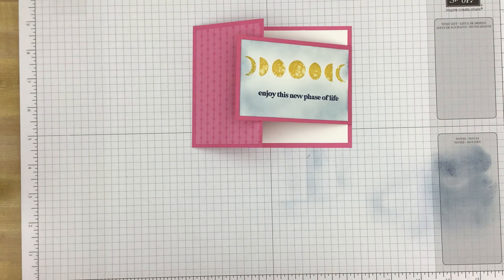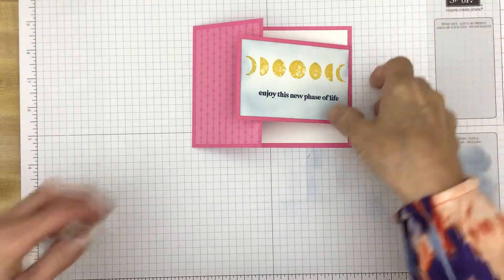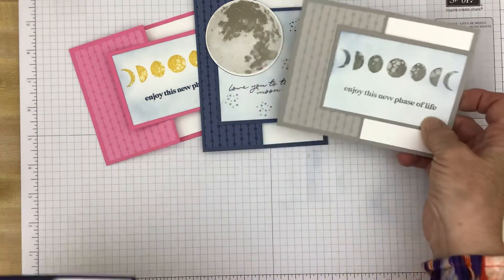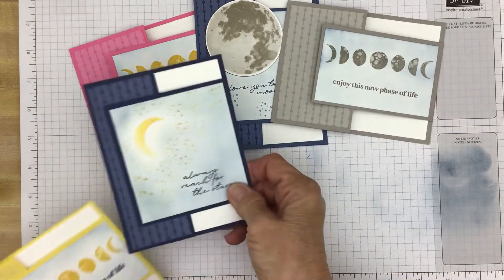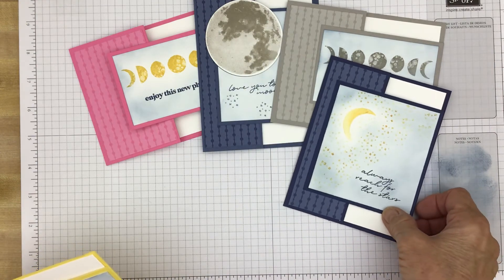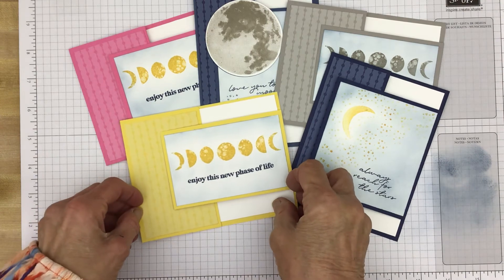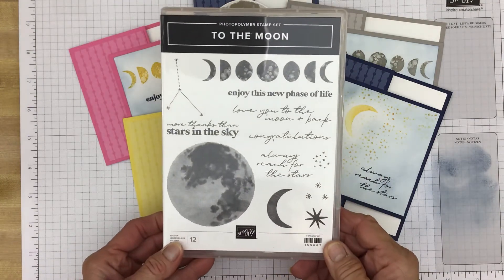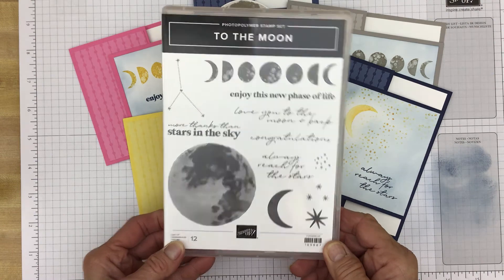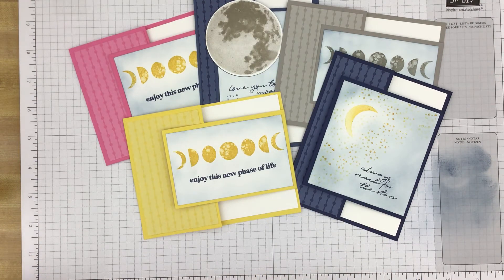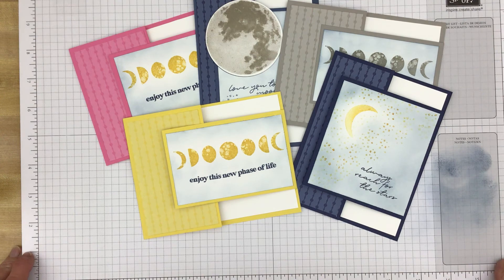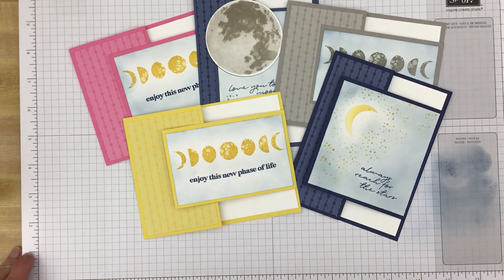So let's bring in those others. Putting the ink away before I have it everywhere. Here's the one we just made. And here's the Love You to the Moon and Back. And here's the one like the one we just finished making. And here's the Always Reach for the Stars. And Enjoy this New Phase of Life. And again, these cards were made with the To the Moon Stamp Set. So once again, on my blog, there will be all the measurements and instructions to make these cards. Thank you again for joining me today. If you like this video, please give me a thumbs up. Until next time, stamp happy!